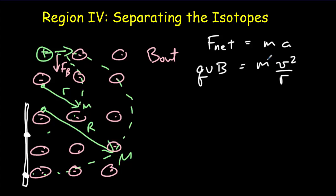We can solve for the mass. We can cancel out a V. The mass is going to be proportional to R, and the proportionality constant will be QB divided by V.